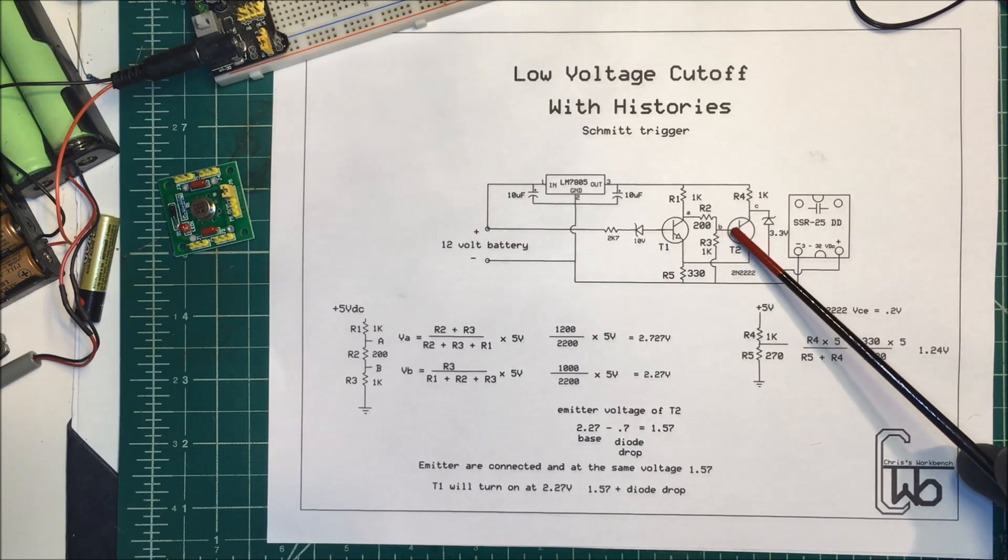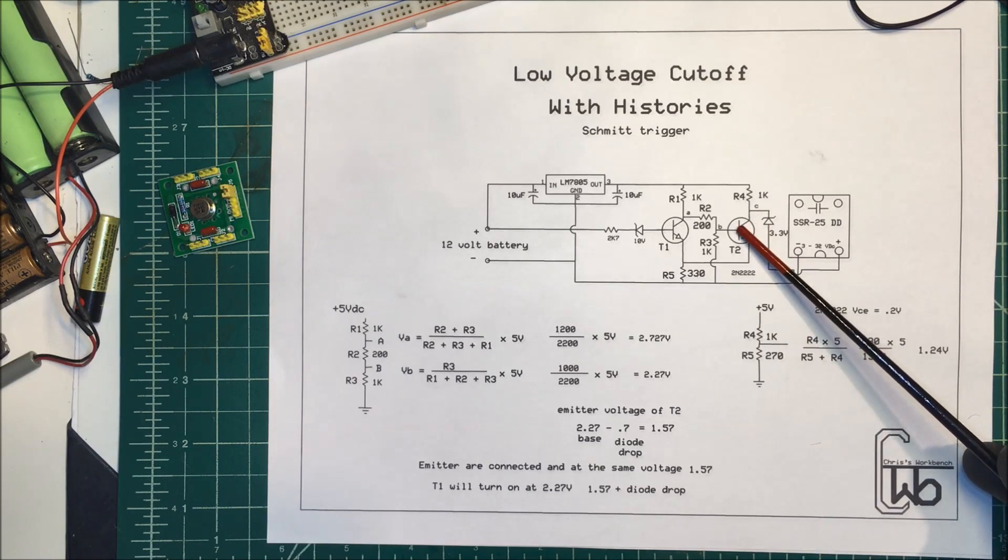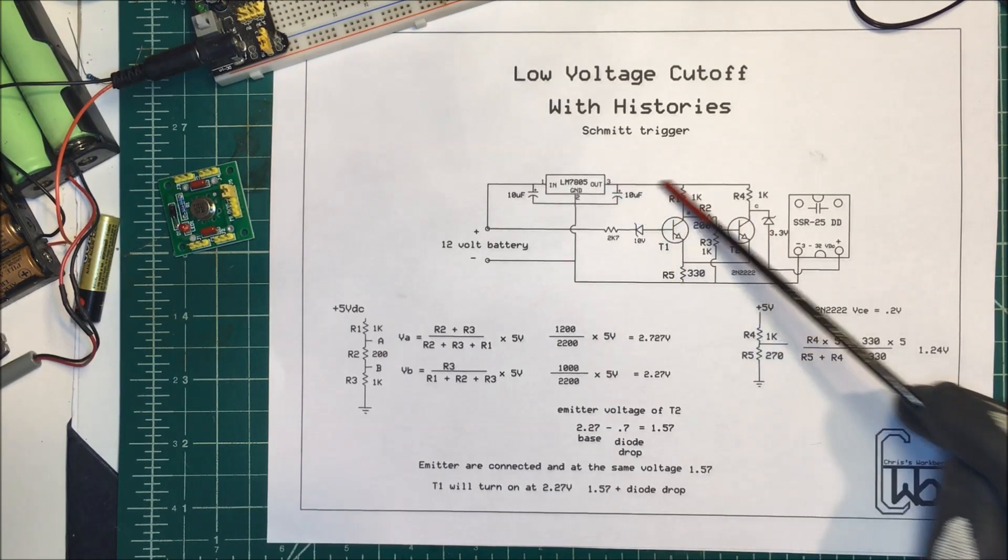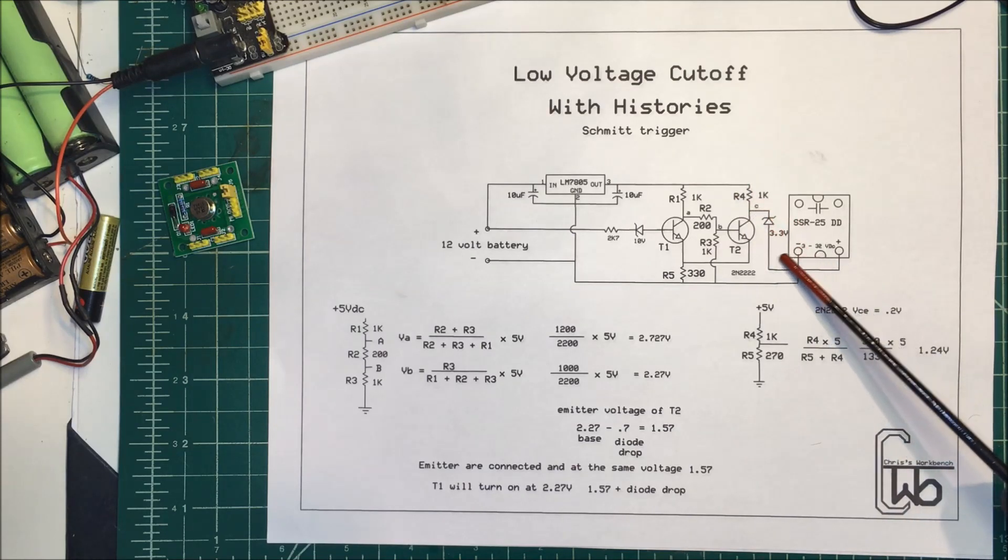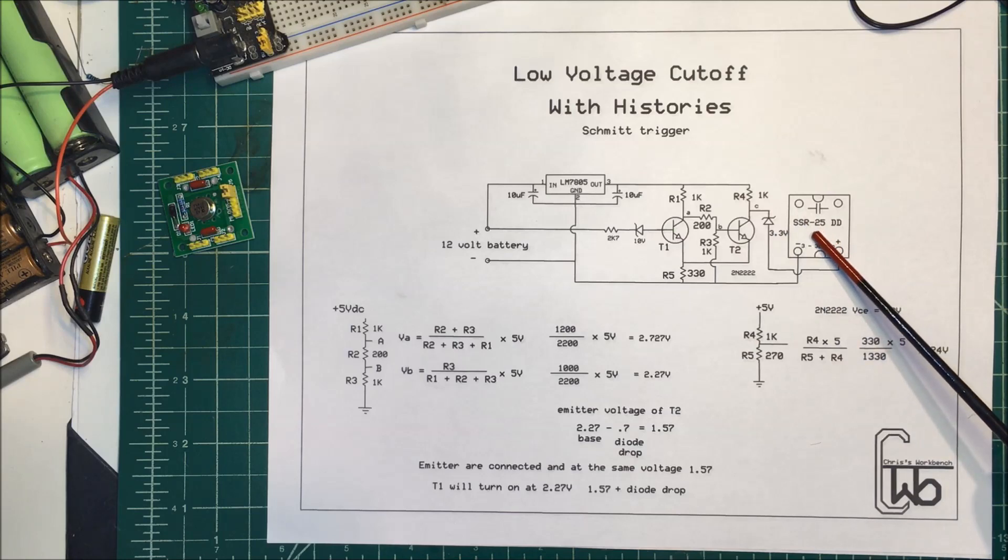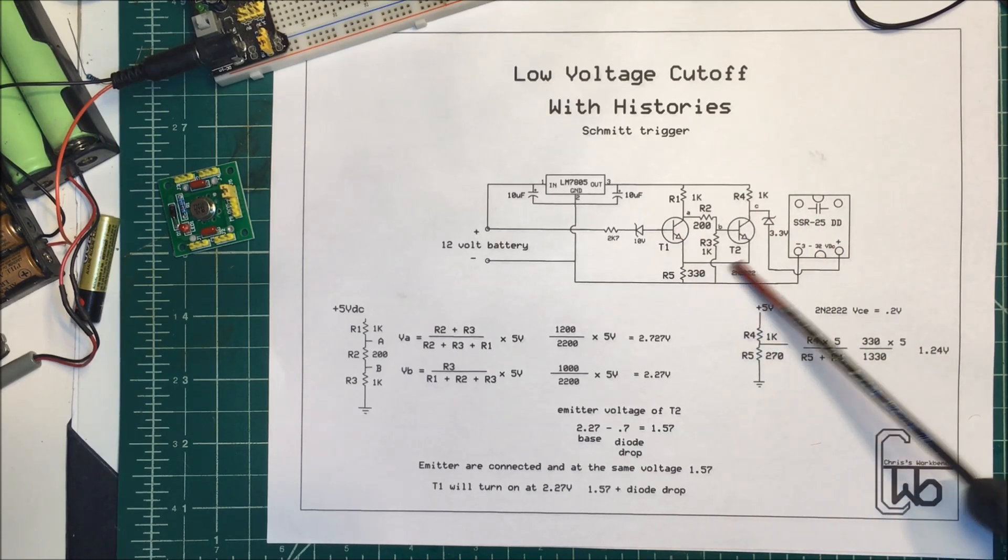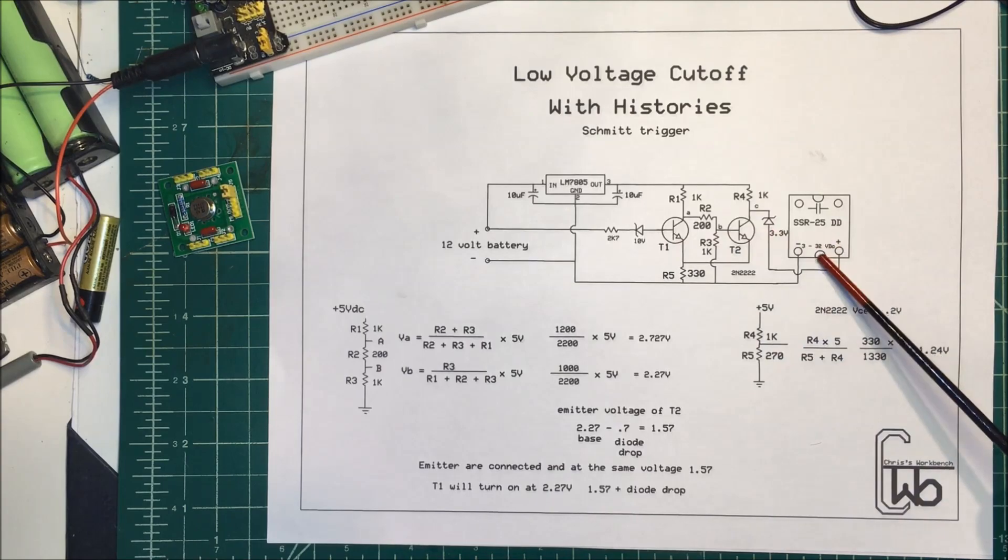If this is off and it's open here then the voltage is going to come through the 1k and down into the relay turn it on. I'll have my 5 volts over here so that's how the Schmitt trigger is going to work and I've got it set up here we'll see how it works.